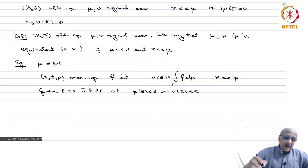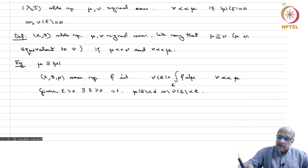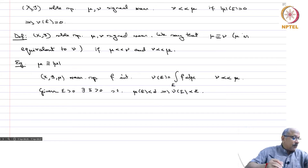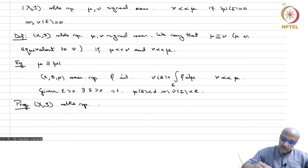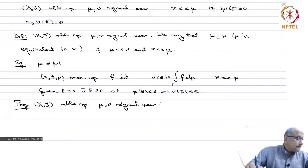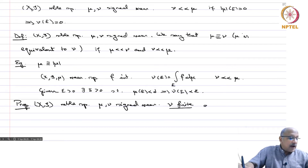We have mentioned absolute continuity with respect to the measure nu(E) = integral of f over E d mu in two ways. We reconcile both in the following proposition. Notice that nu is a finite measure because f is integrable. Proposition: X is a measurable space, mu and nu are signed measures, nu is finite and absolutely continuous with respect to mu.